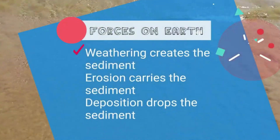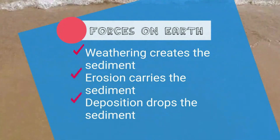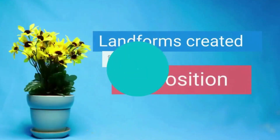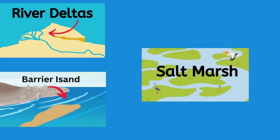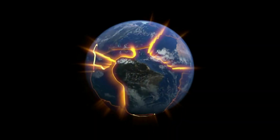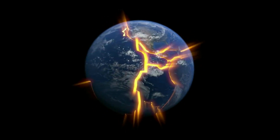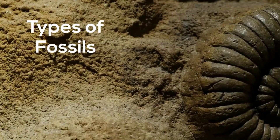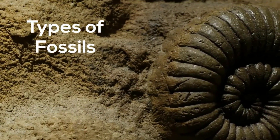Erosion, transportation, and deposition are processes that shape the earth's crust and surface. Deltas, barrier islands, and salt marshes are landforms created by deposition. Plate tectonics explain the movement of the earth's tectonic plates and the formation of geological features. Fossils provide insight into the history of life on earth.